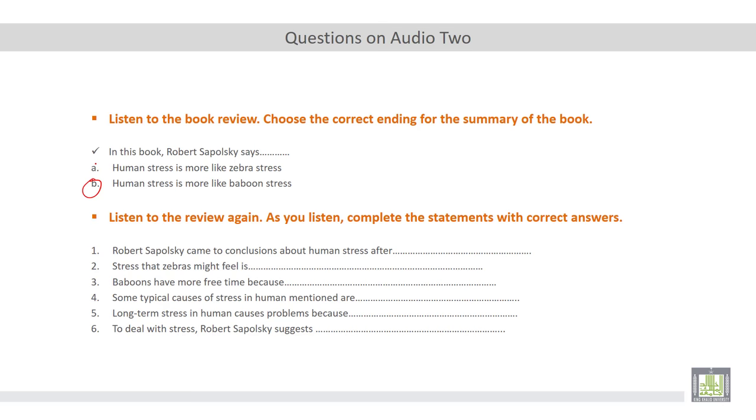Now, listen to the review again. As you listen, complete the statements with correct answers. Number one, Robert Sapolsky came to conclusions about human stress after. Yes, he came to these conclusions after working with animals for 20 years. Yes, that's number one.